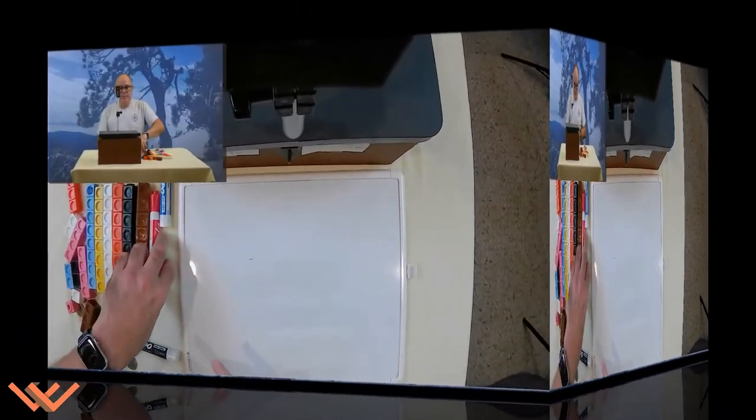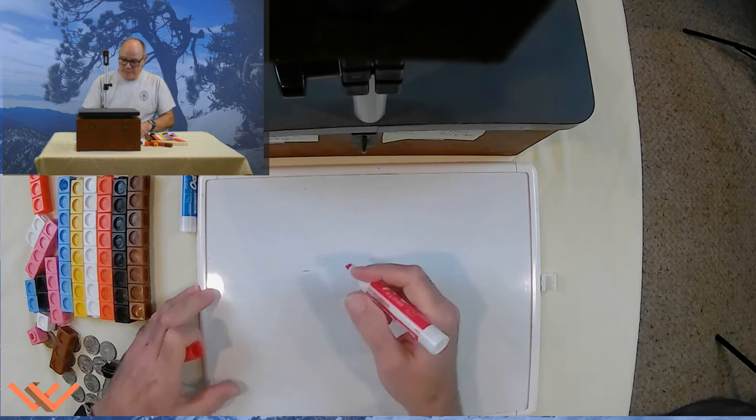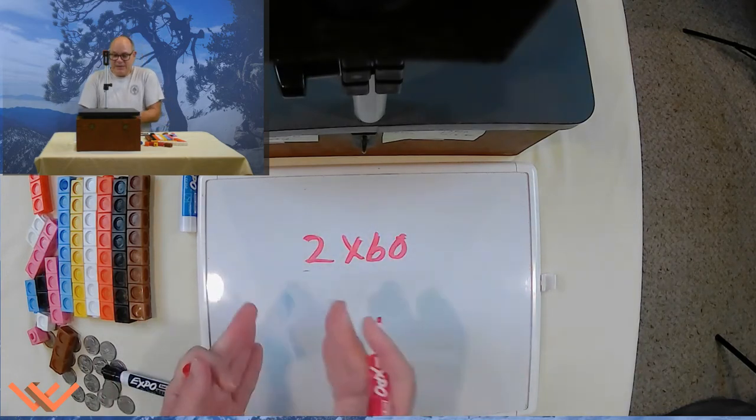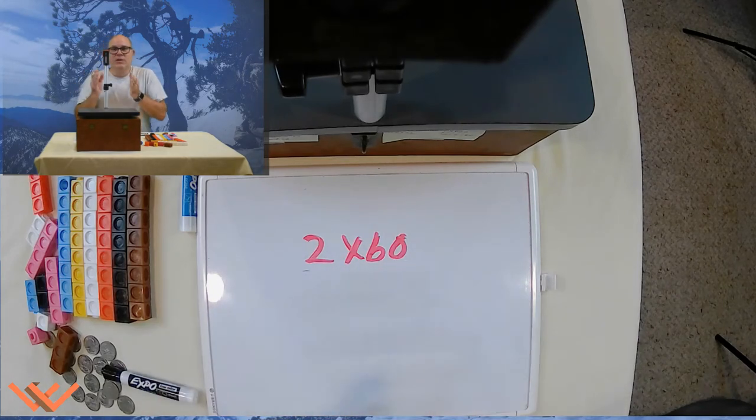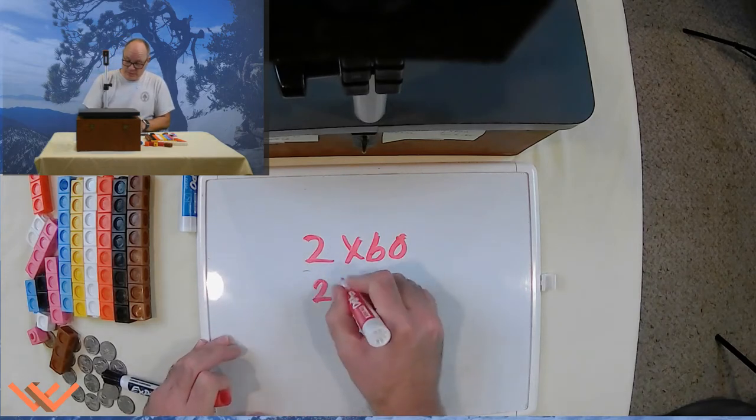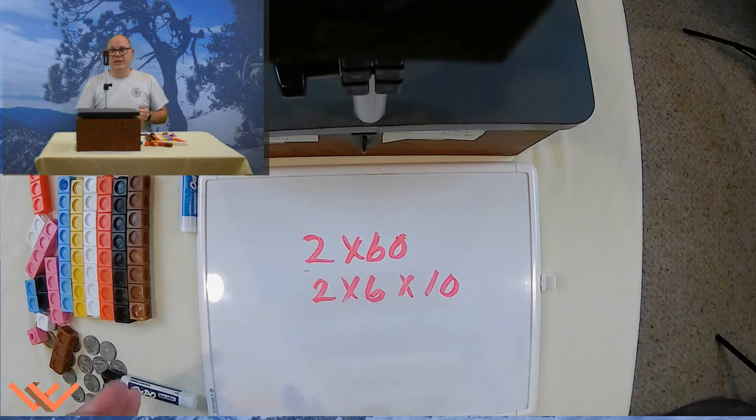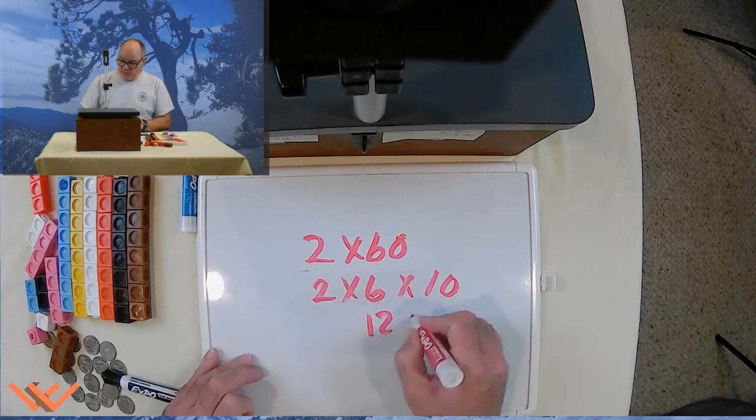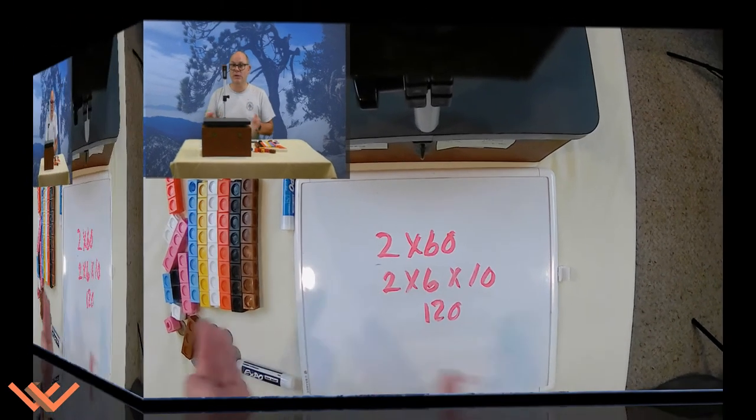Let's take a look at some other things. Now I showed you 20 times 6, but what about 2 times 60? That's 2 times 6 tens. Same thing. 2 times 6 times 10. Doesn't matter how you have it broken up. It's still going to be the same way. So that's still going to be 120. Because 2 times 6 is 12 times 10. Put a 0 at the end. 120.